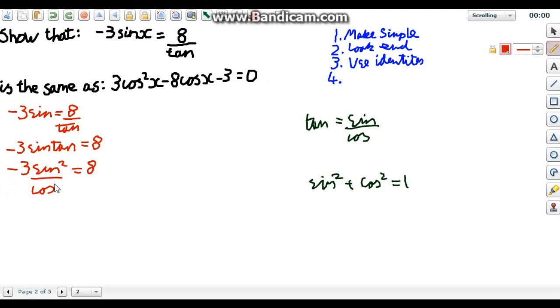I'm going to make it simple again. We've got a fraction. Let's get rid of that because they just make things awkward. So we're going to times through by cos. We get minus three sine squared is equal to 8 cos.